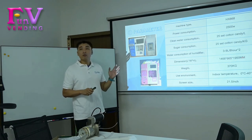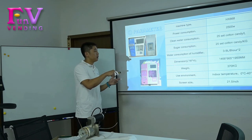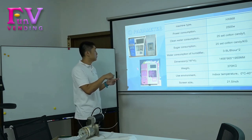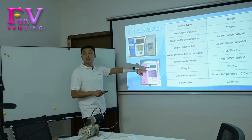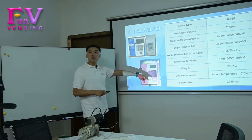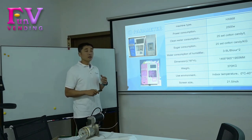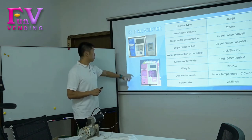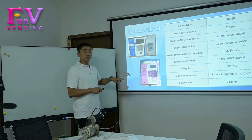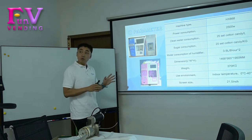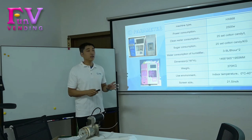When you want to buy this machine, you can see these are the actual sizes. The weight is 370kg. Some people, like a woman, may think it is too heavy — but don't worry. You can see there is a wheel here. This wheel allows the candy cotton machine to move very smoothly, and it can turn and move very freely.